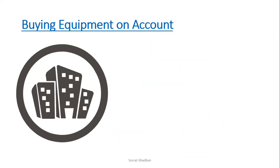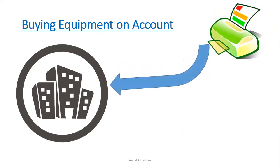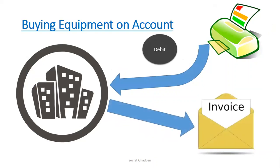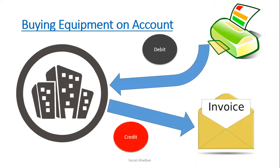The third transaction is buying equipment on account. The equipment is entering the company, so it's debit. In return, the company is giving a promise that it will pay the invoice on a future day, so this is a credit. This is an accounts payable, which is part of liabilities. So the normal balance of a liability is a credit, meaning the liability increases with credit.